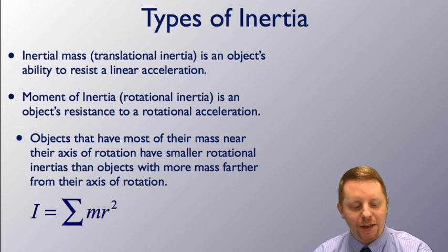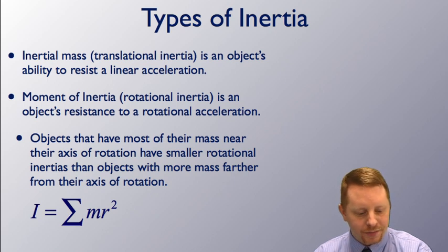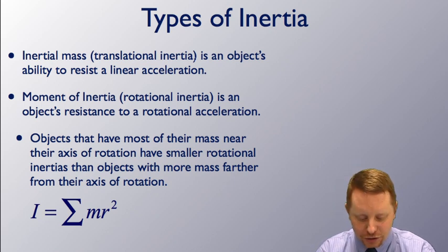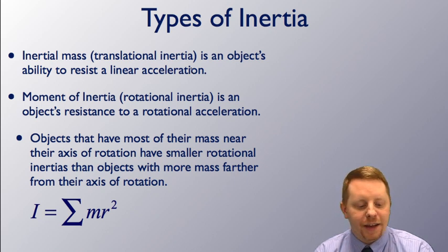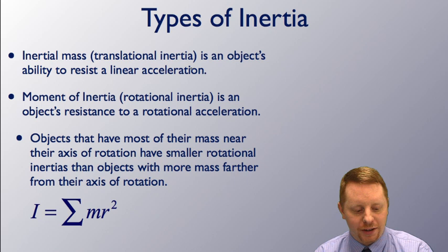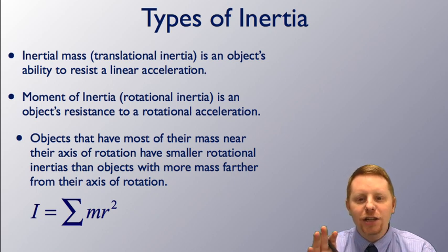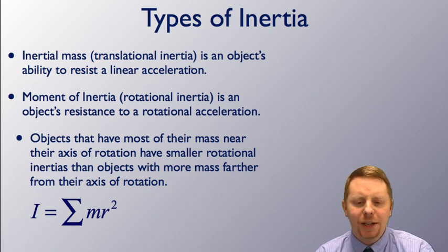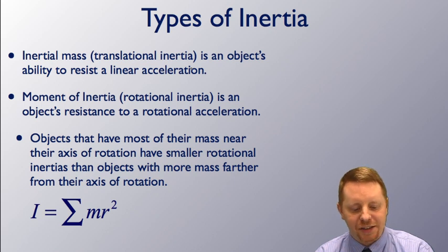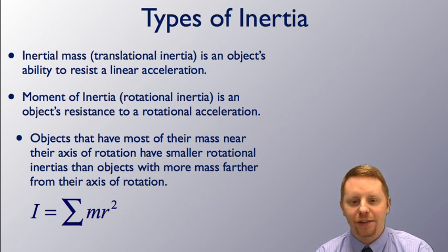Let's start by talking about types of inertia. Inertial mass, or translational inertia, is an object's ability to resist a linear acceleration. On the other hand, moment of inertia or rotational inertia is an object's resistance to a rotational acceleration. Objects that have most of their mass near the axis of rotation have smaller rotational inertias than objects with more mass farther from the axis of rotation.